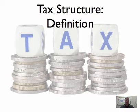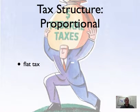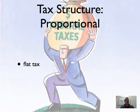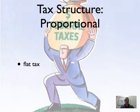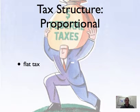The first type of tax structure we'll talk about is a Proportional Tax. Sometimes this is called a Flat Tax, because a Proportional Tax takes the same share, or the same percent, of income for all income levels. That's why it's called a Flat Tax — it doesn't change.